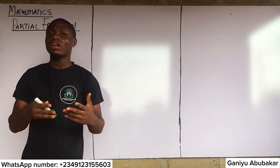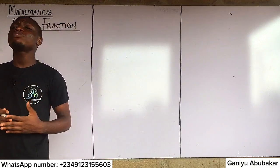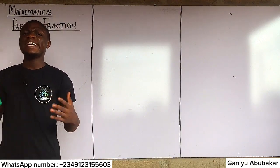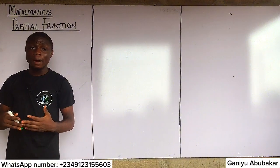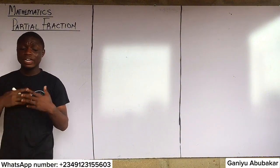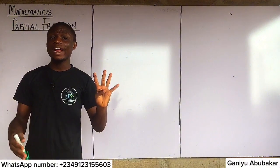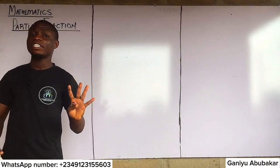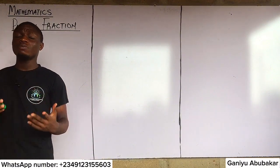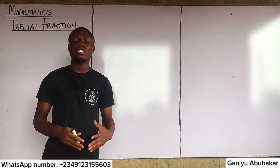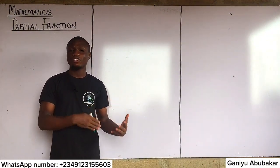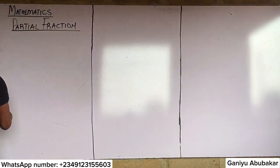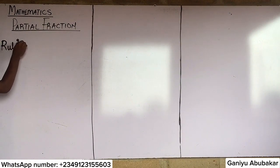When it comes to partial fractions, there are several rules that guide them — about four rules in total. For today, we're discussing Rule 1 that governs partial fractions.